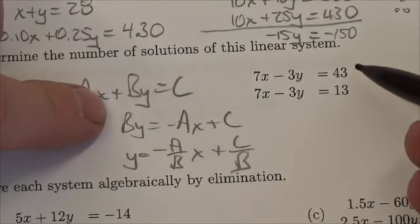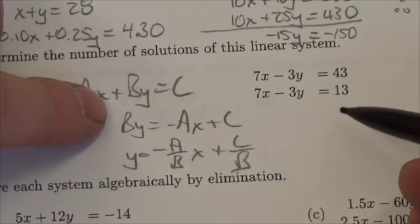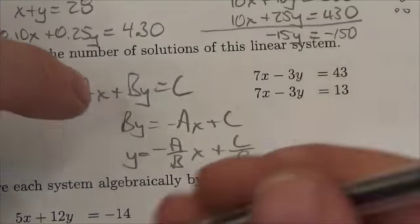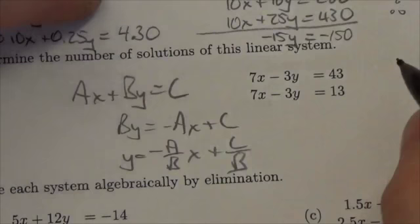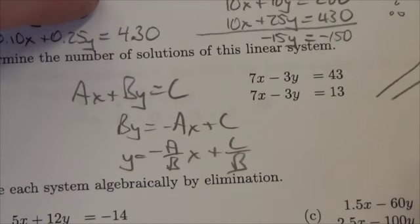This is the same numbers, but since c is different in both cases here, my y-intercepts will be different. So what does it mean to have two lines with the same slope but different y-intercepts? It means they're parallel.